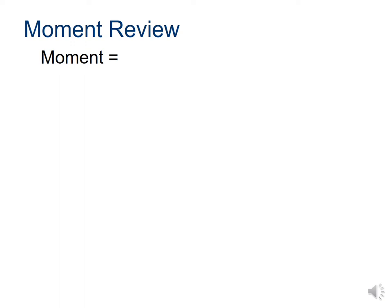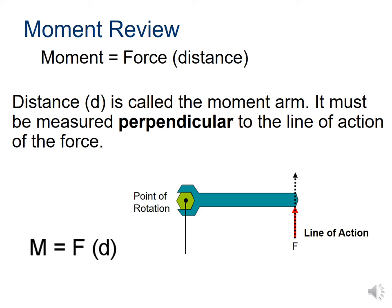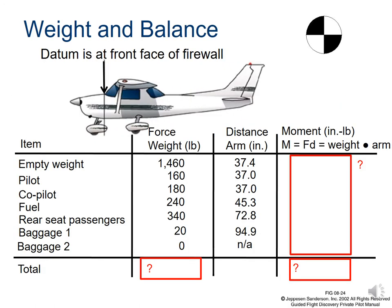We use moment around the reference point or datum to determine if the plane is within a safe range. Remember that moment, or torque, is the force times the perpendicular distance from the point of rotation. Here is an example of calculating the moment and total weight of an aircraft. You will see the various items we account for, including the empty weight of the plane, the pilots, the fuel, the passengers, and the baggage or cargo. We will use weight as the force — in aviation operations, the term weight is used in place of force as the specific force considered for the weight and balance calculation. The distance arm will be the perpendicular distance from our reference point in inches. For this example, we are using the firewall as the datum.